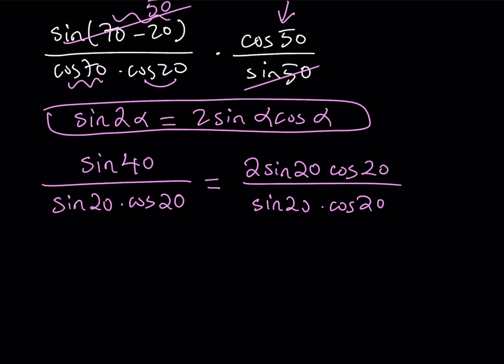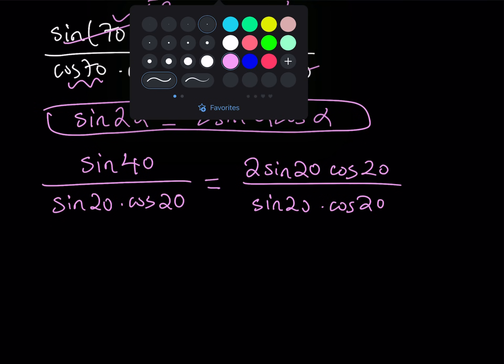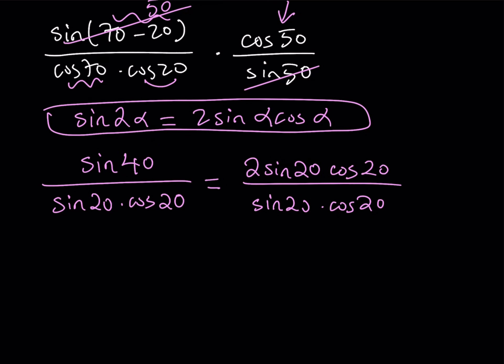Again, these are all in degrees, even though I'm not writing it because it takes too long to write. OK, so what am I doing at this point? Well, we can just go ahead and simplify some terms here, like pretty much everything. Right. Sine 20 cancels out. Cosine 20 cancels out. And we end up with 2.